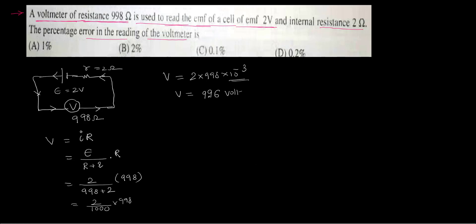So the actual voltage that it is supposed to measure is 2 volts, but it is measuring it as 9. Sorry, 10 power minus 3. So I have made a calculation mistake here. So 2 times 998 is 2, 8's are 16, 2, 9's are 18, and 1, 1, 19, 2, 9's are 18, and 1, 1, 19. And 10 power minus 3 is there. So that value will be 1.996 volts.